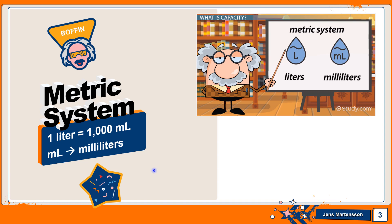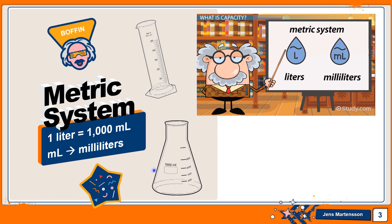Now let's look at some science type equipment that we would use in science experiments to measure liquids. For example, a graduated cylinder, an Erlenmeyer flask, or you might even measure liquids by using a beaker.